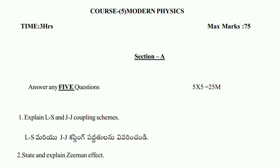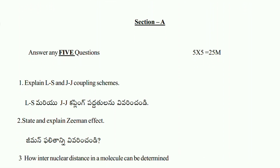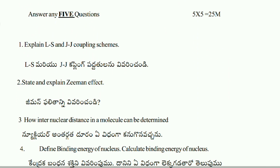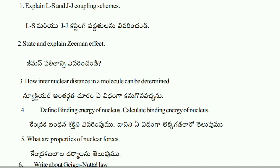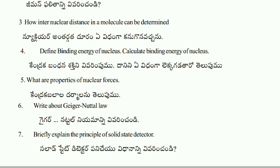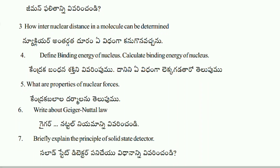Short question one: explain LS and JJ coupling schemes. Two: state and explain Zeeman effect. Three: how inter-nuclear distance in a molecule can be determined. Four: define binding energy of nucleus. Five: calculate binding energy of nucleus. And six: what are the properties of nuclear forces?